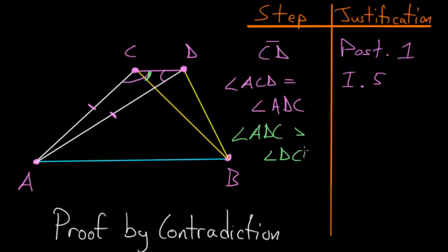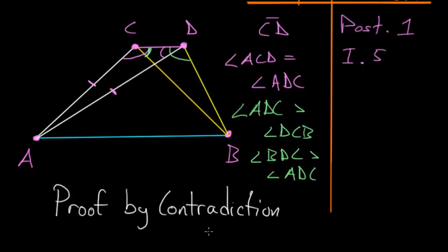We can also notice that this angle ADC has to be smaller than this angle CDB. So angle BDC is bigger than angle ADC, and ADC is bigger than DCB. Then we can conclude that angle BDC must be much bigger than angle DCB.